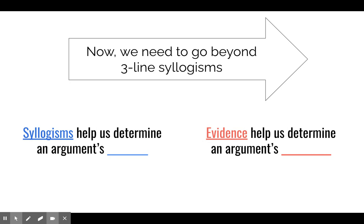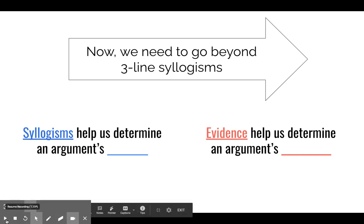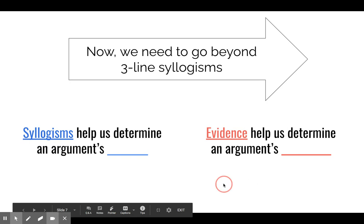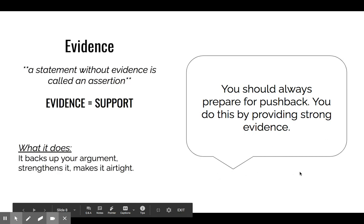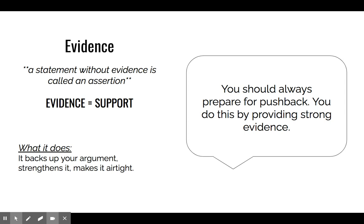We learned that syllogisms help us determine an argument's validity — meaning it's logical, it's reasonable, it makes sense just looking at the logic. But evidence helps us determine an argument's credibility, meaning is this the best way to argue this point or to persuade someone. You have to provide strong evidence because you have to assume that basically everyone's going to be against your argument. If you have really solid evidence, it's going to make your argument strong and your persuasion the most effective possible.